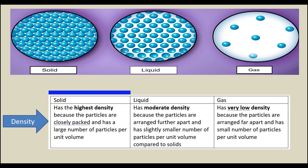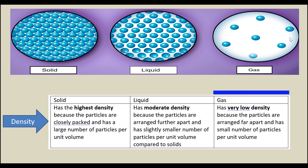In terms of density, solid has the highest density because the particles are closely packed and there are a large number of particles per unit volume. Liquid has moderate density because the particles are arranged further apart and has a slightly smaller number of particles per unit volume compared to solids. Gas has very low density because the particles are arranged far apart and has a small number of particles per unit volume.